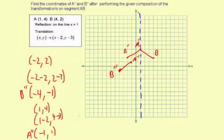So the coordinates, A double prime is going to be negative 1, comma 1. And B double prime is going to be negative 4, negative 1.